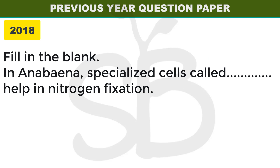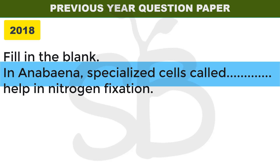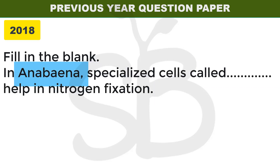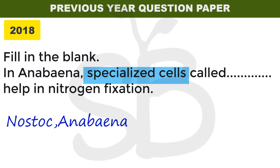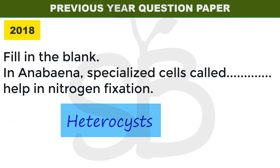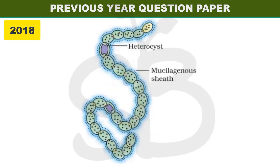Next question, 2018 annual exam: fill in the blanks. In Anabaena, specialized cells called dash help in nitrogen fixation. Anabaena belongs to cyanobacteria, or blue-green algae. The specialized cells used for nitrogen fixation are called heterocyst. You can learn the diagram of heterocyst from the textbook.